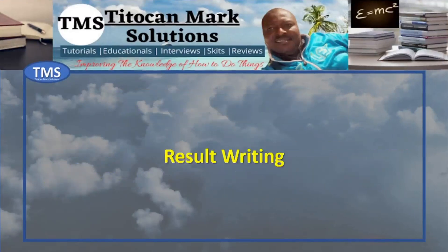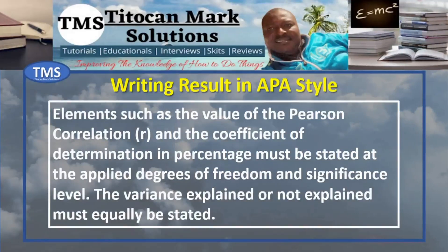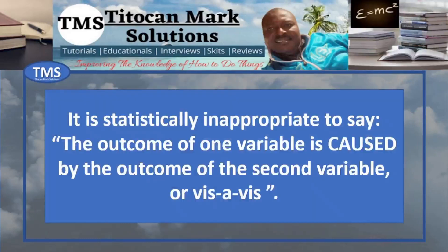This is how you are expected to present the final result. In presenting the final result, elements such as the value of Pearson's correlation r and the coefficient of determination in percentage must be stated at the applied degrees of freedom and significance level. The variance explained or not explained must equally be stated. In Pearson's correlation analysis, it is statistically inappropriate to say the outcome of one variable is caused by the outcome of the second variable, or vice versa.